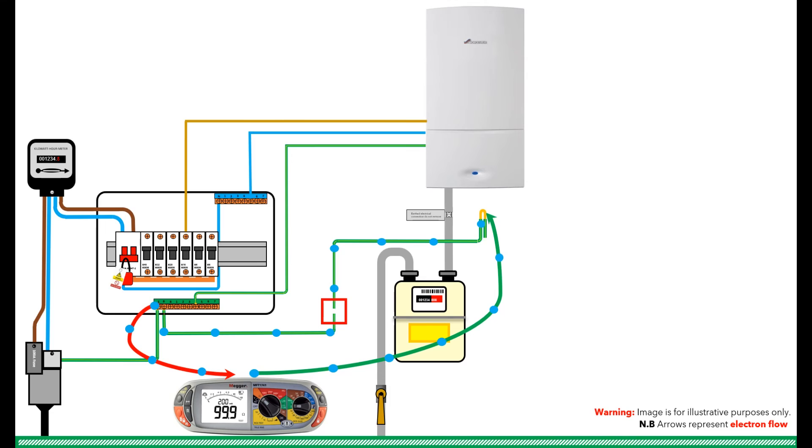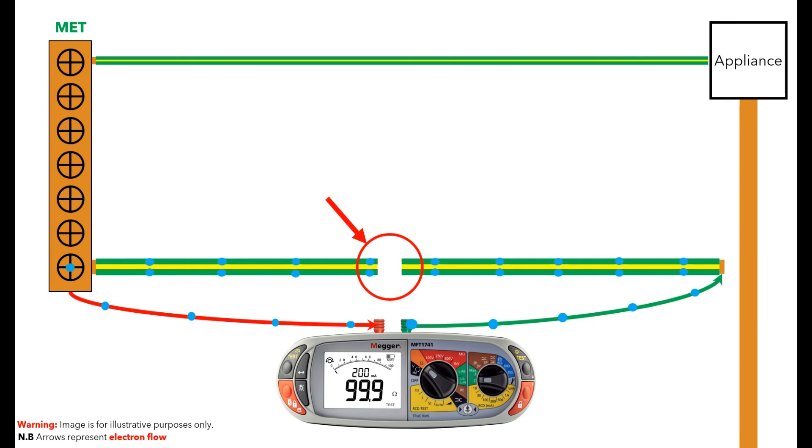If you had a break in the cable, the electrons would not flow as there is no other way for the electrons to get back to the MET, and you would get an out of range reading on your low ohm resistance tester greater than 99.9 ohms. The simplified model would look like this. As you can see, the circuit is now completely broken and the electrons cannot flow, so the meter displays an out of range test reading.